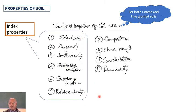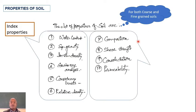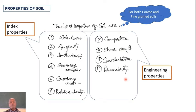The second set of properties — numbers 7, 8, 9, and 10 — are compaction properties, shear strength, consolidation, and permeability. These are known as engineering properties, also referred to as mechanical properties or behavioral properties.